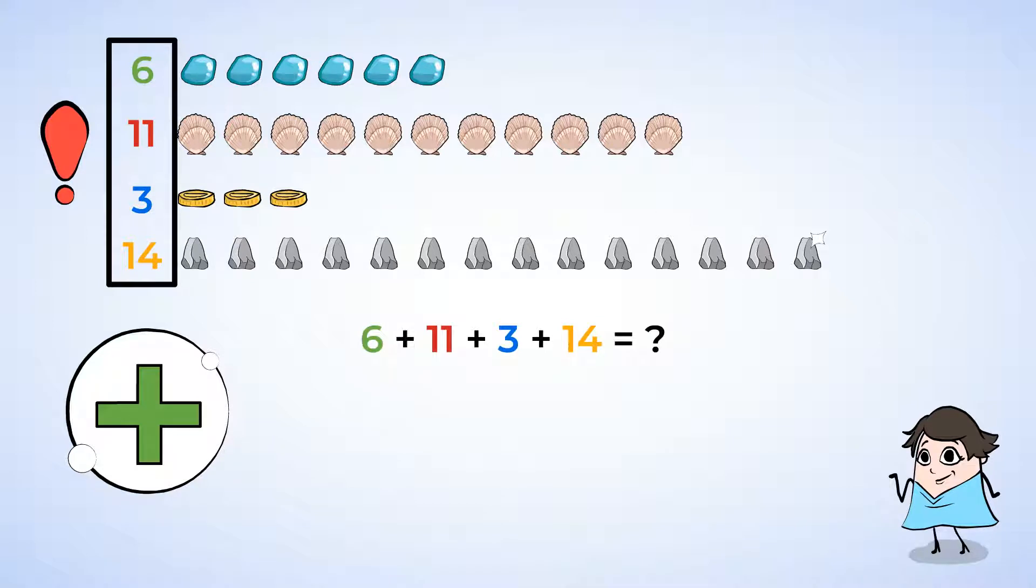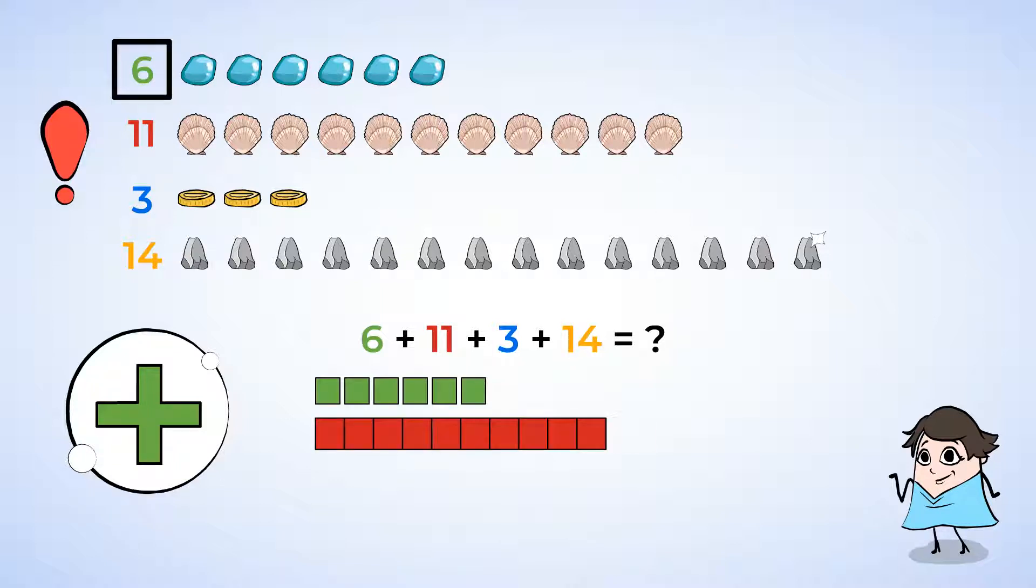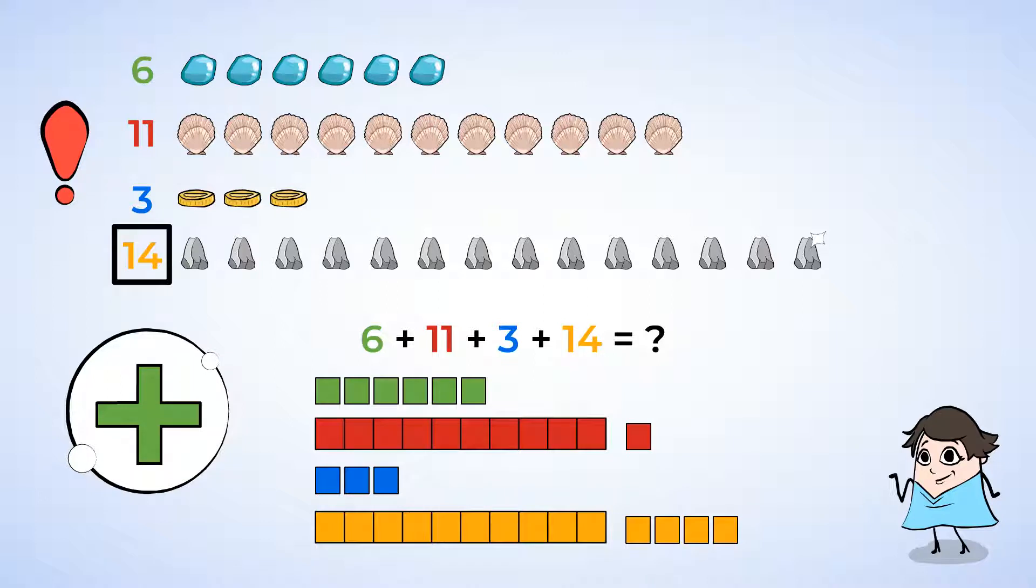We can start by modeling with our base 10 blocks. Here are 6 unit cubes for the sea glass. Here's a 10 stick and 1 unit cube for the seashells. These are 3 unit cubes for the coins. And this is a 10 stick and 4 unit cubes for the rocks.